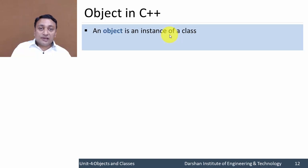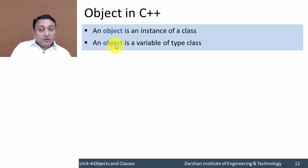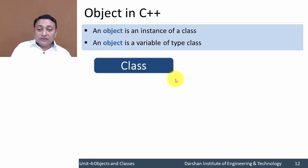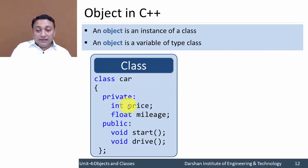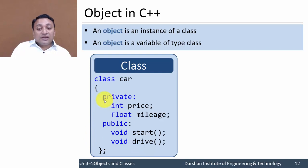Through this object we can access members of the class, similar to how through a structure variable we can access members of that structure. Suppose we have class 'car' with data members price and mileage, and functions start and drive. Private and public are access specifiers — we will discuss these in detail in later lectures, so for now ignore them and consider all of these as class members.